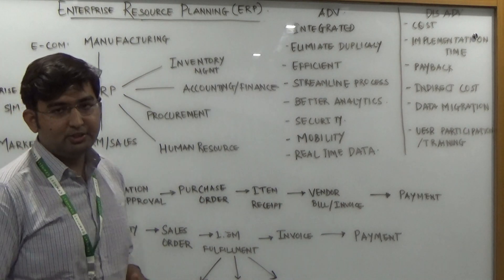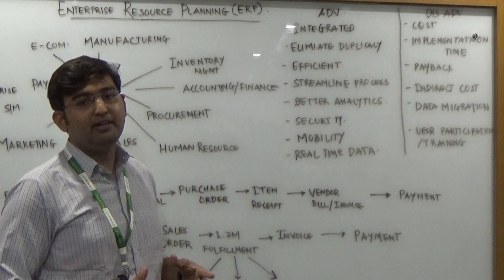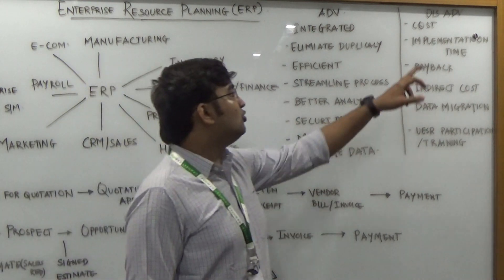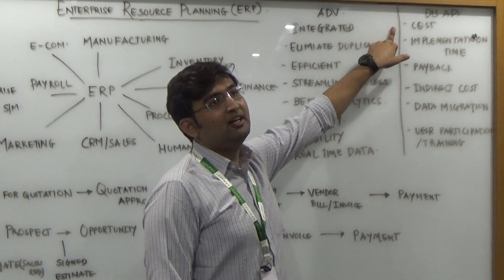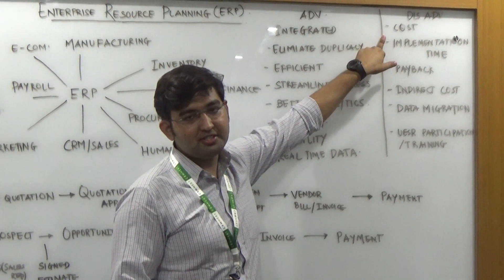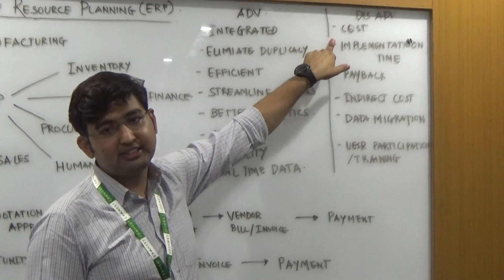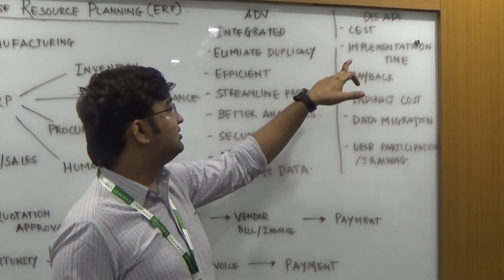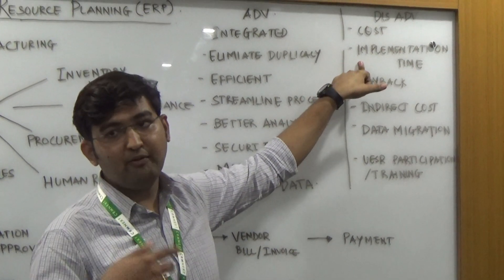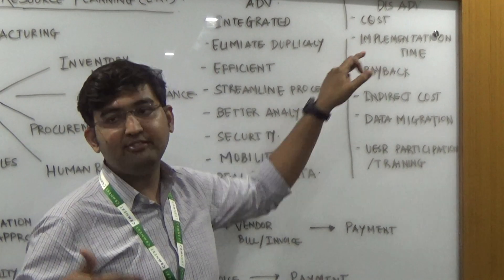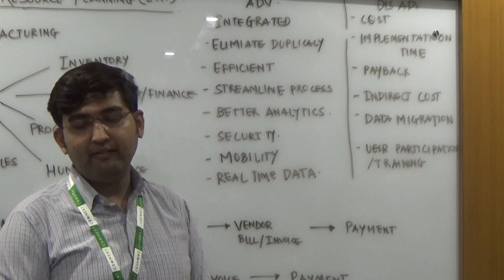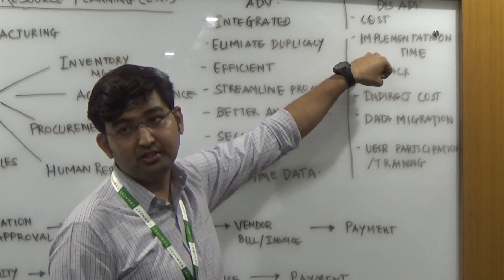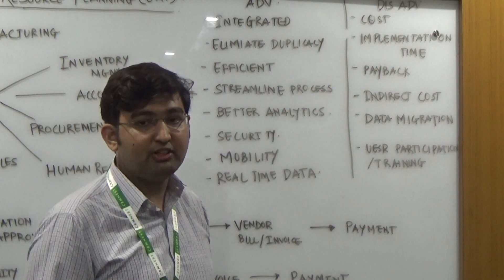ERP systems are very efficient, but it doesn't mean they have no disadvantages — every system has disadvantages. In the legacy system, you just maintain registers and papers, and that cost is negligible compared to profit. With ERP, the cost of the system increases. Second is implementation time — when you decide to move from legacy to ERP, it is not done overnight. It does take time; normally implementation has taken more than a year. During that period, you incur cost and business has to suffer.